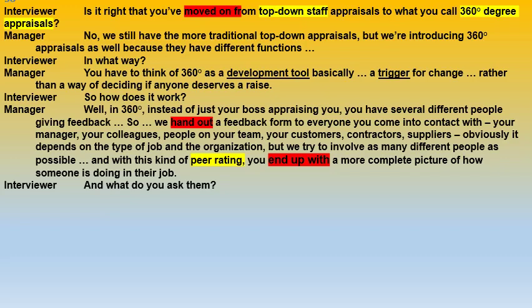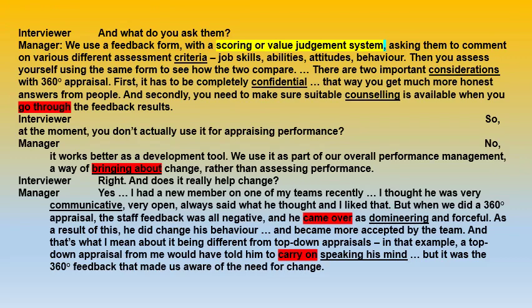The interviewer asks: 'What do you ask them in this appraisal form?' We use a feedback form with a scoring or value judgment system — where the answer is not yes or no, but graded from 1 to 2 to 3 to 4 — asking them to comment on various different assessment criteria: job skills, abilities, attitudes, behavior. Then you assess yourself using the same form to see how the two compare. So there are different standards of assessment — job skills, abilities, behavior with each other — and you fill the same form yourself, then both are compared to see if they are similar.